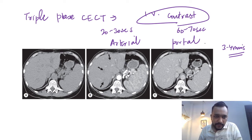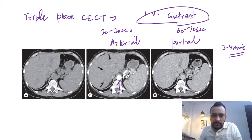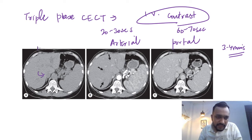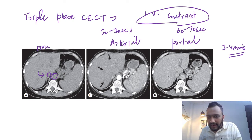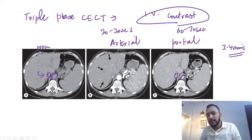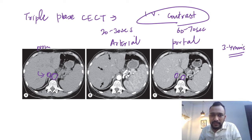To identify these phases, we look at the enhancement of the aorta and IVC. In the arterial phase, only the aorta is enhancing and the IVC is not enhancing much. In the non-contrast phase, both IVC and aorta are not enhancing. In the portal venous phase, both the aorta and IVC show similar enhancement.